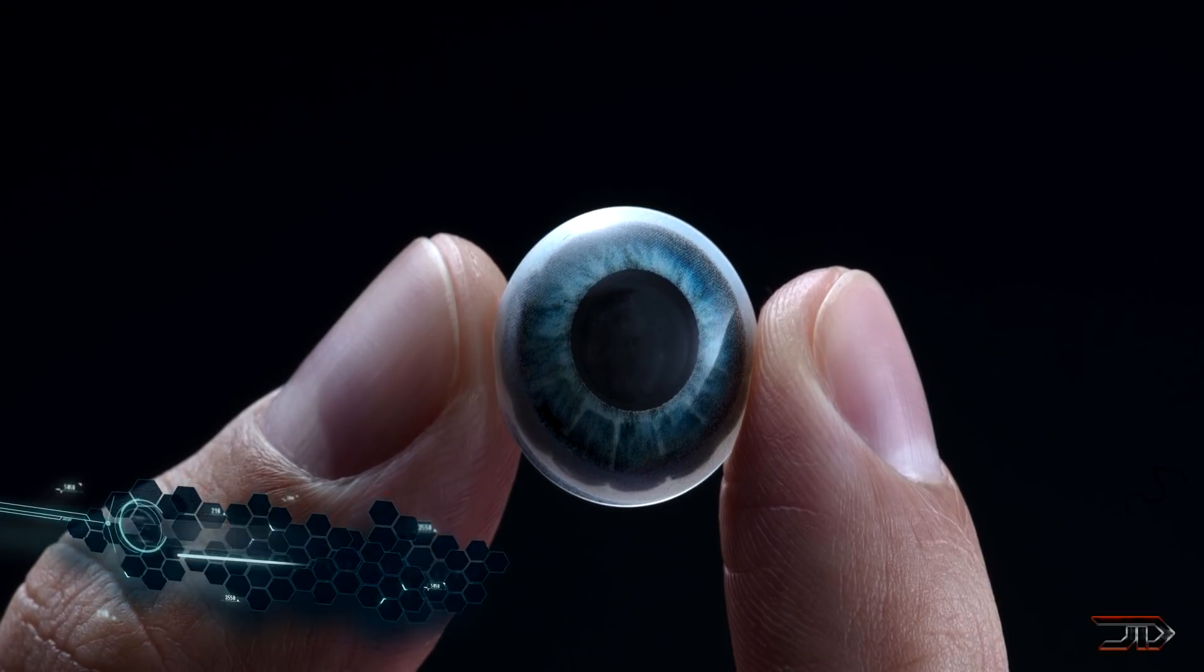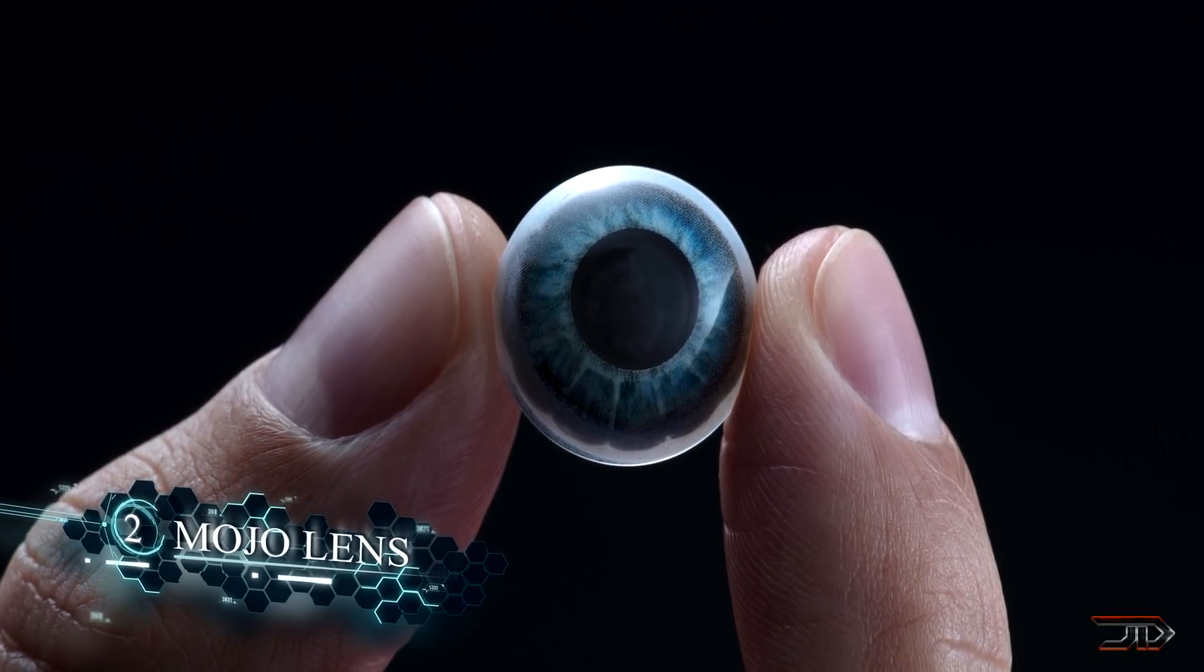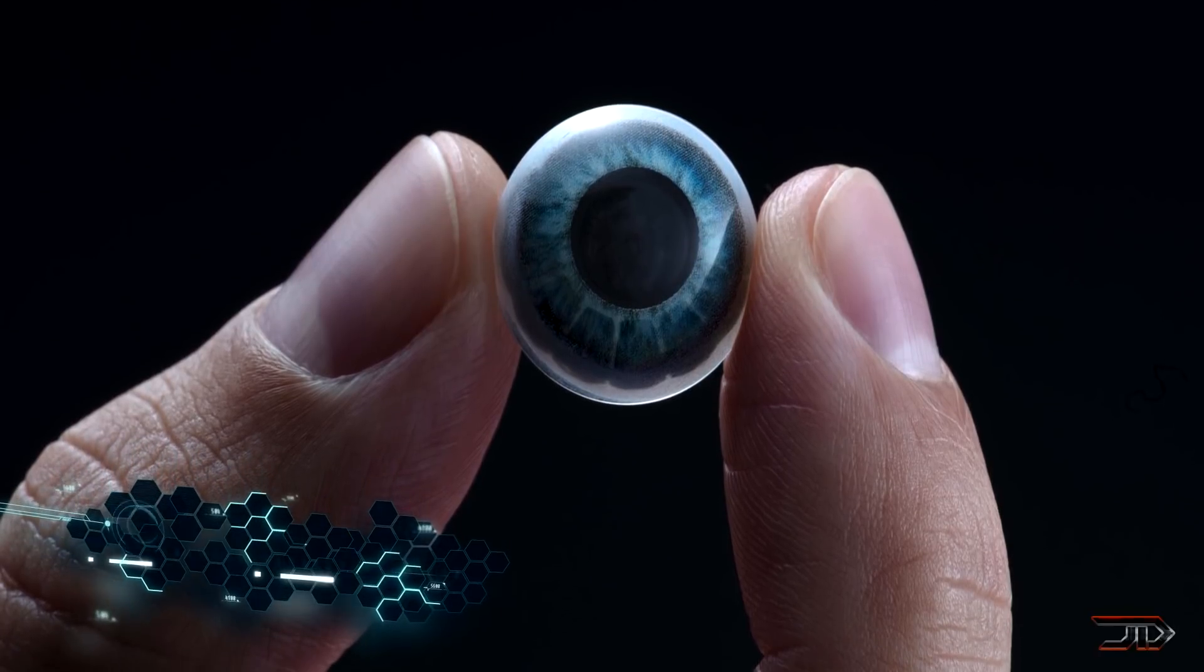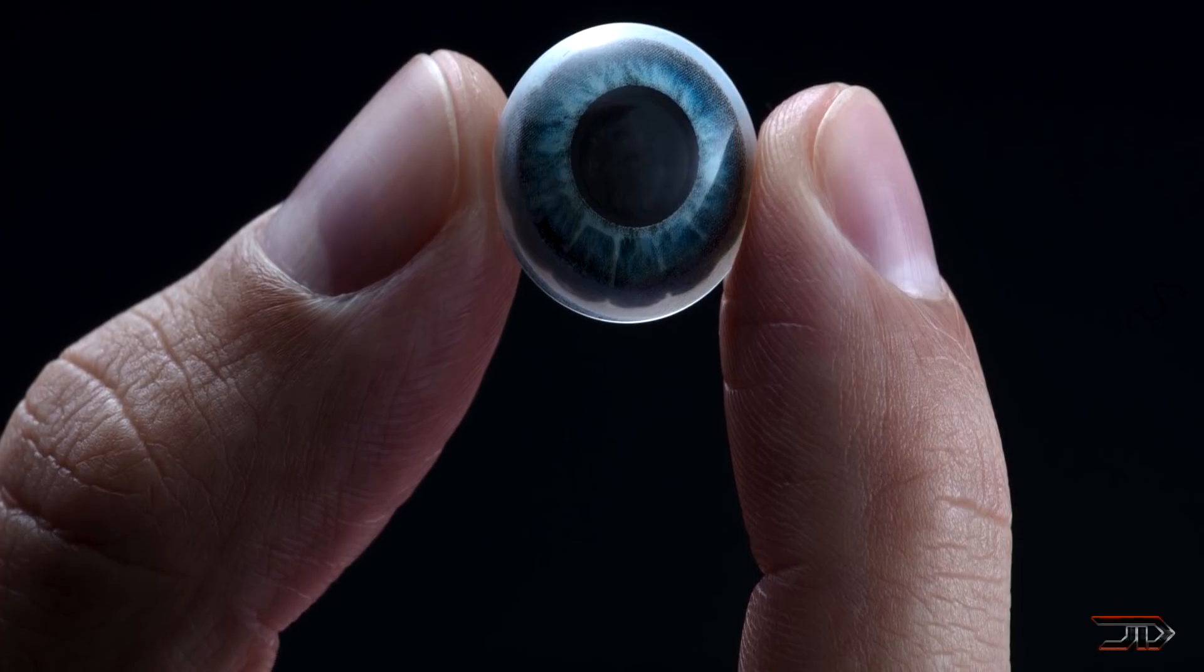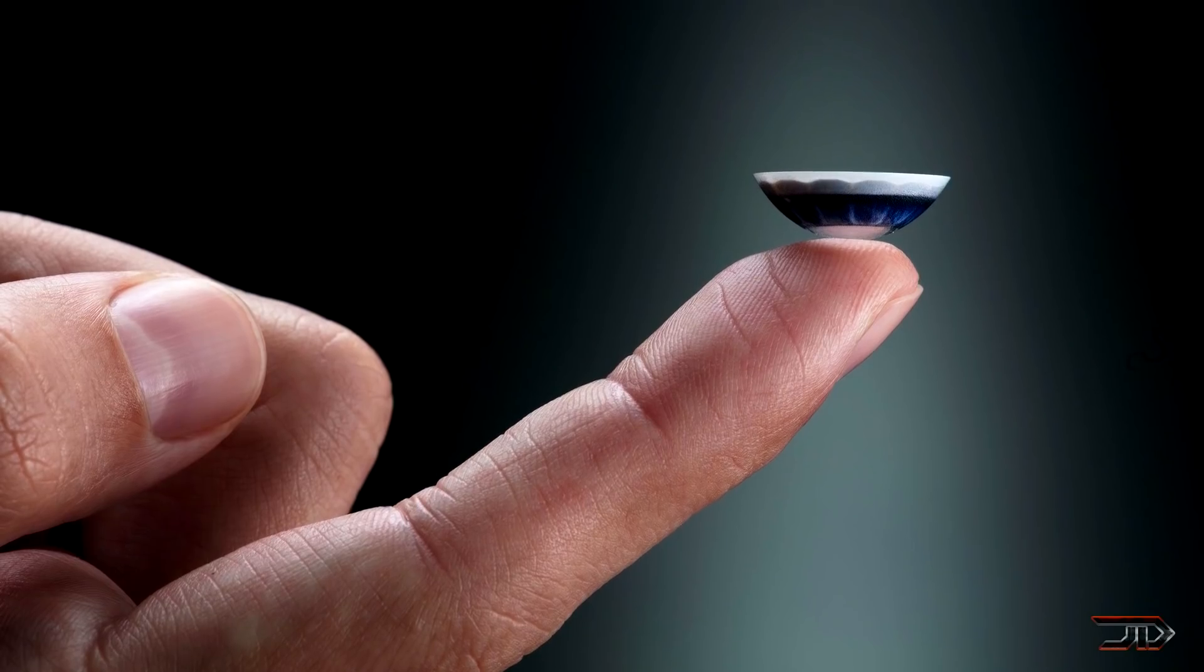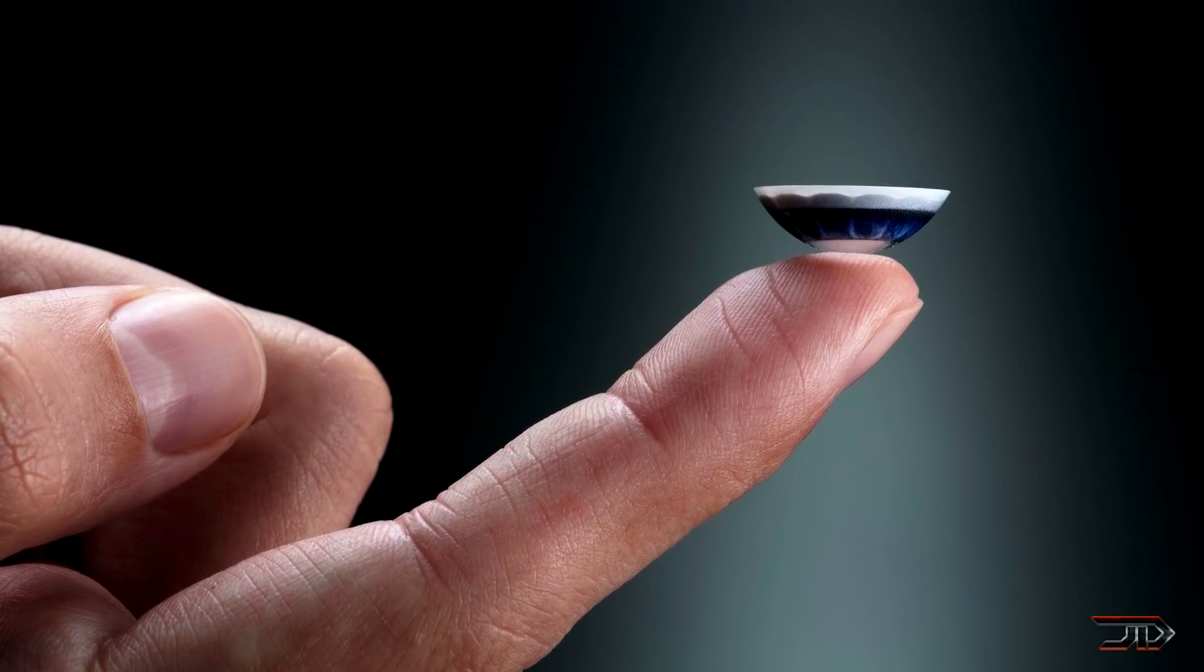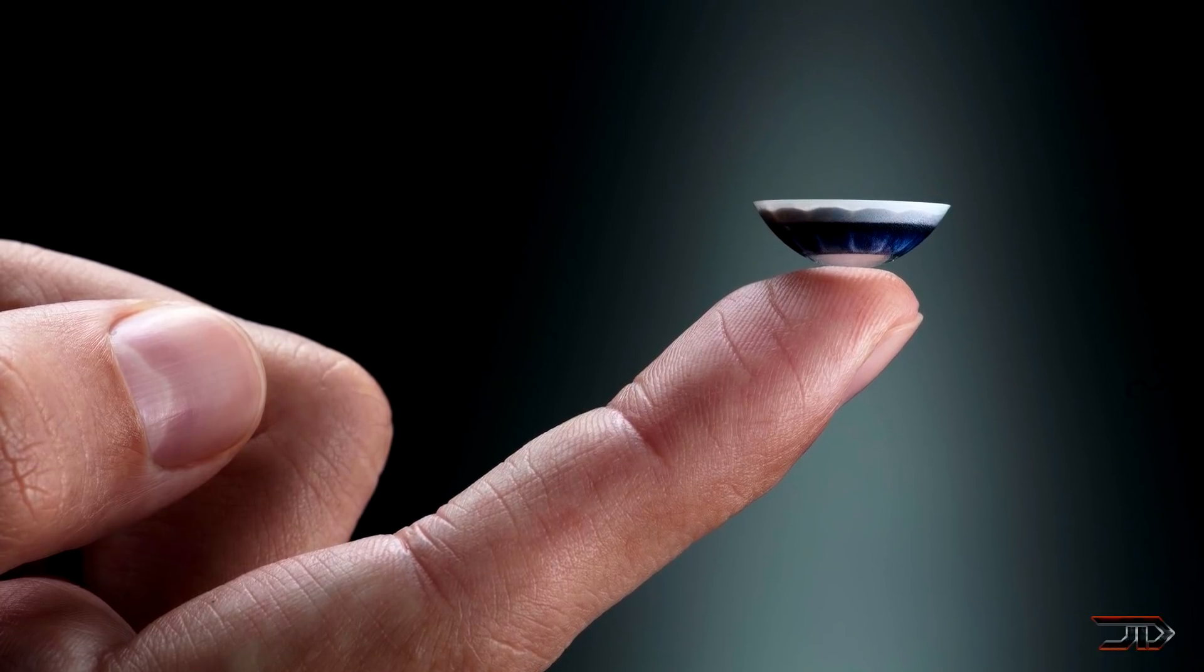We get to number two and this is probably one of the most intriguing display technologies in the world and it's the Mojo Vision. It's a 14k ppi embedded lens and it's one of the most compact dynamic displays with a pixel density 300 times greater than a typical smartphone.